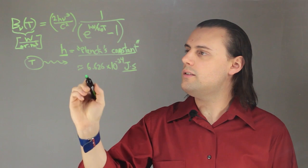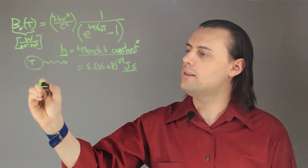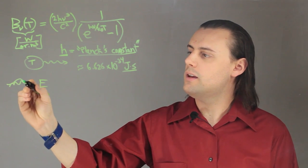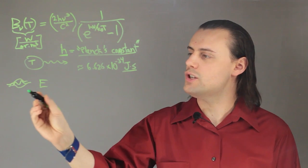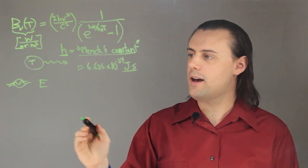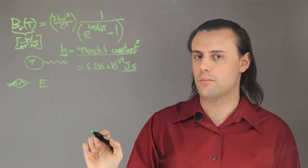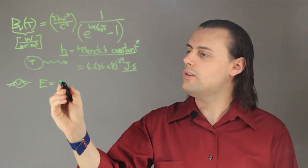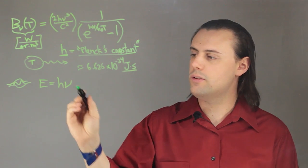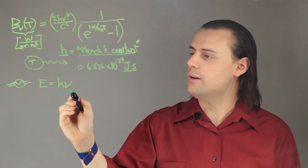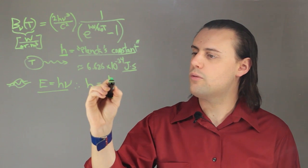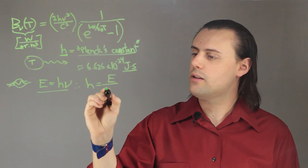This constant appears in the expression for the energy of a photon, where a photon is a quantized packet of energy that can be emitted from blackbodies or even from atoms and can be absorbed by atoms. This energy expression is equal to Planck's constant times the frequency nu of that photon. Therefore, H is simply equal to the ratio of the energy to the frequency.